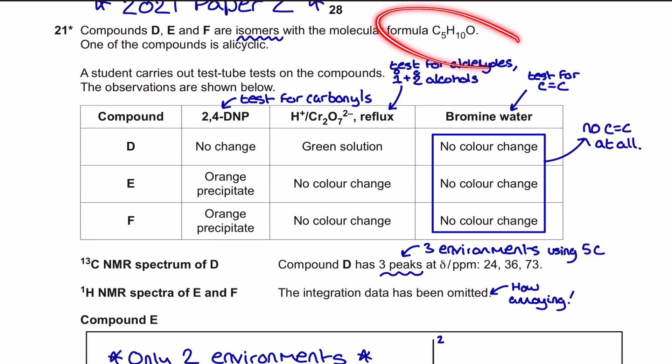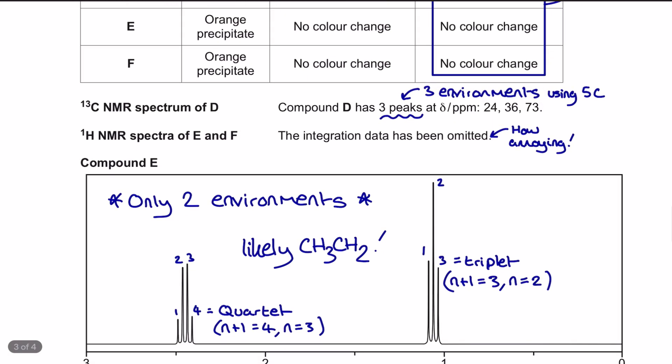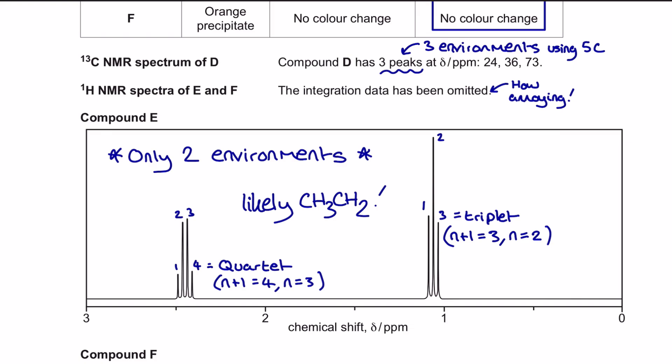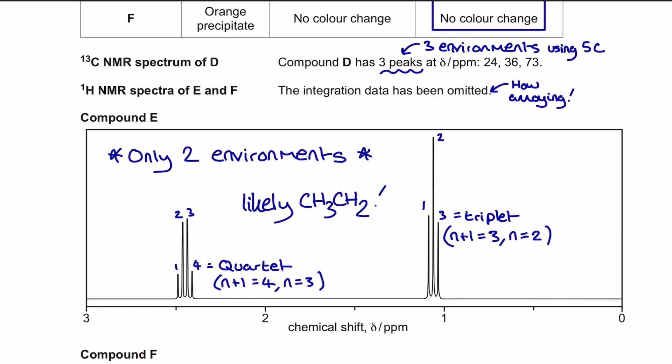They are all isomers of C5H10O and one is alicyclic, which is incredibly likely to be compound D at this stage, since the other two are both ketones and will have very similar structures. Looking at the carbon-13 NMR spectrum of compound D, we've been given three peaks, meaning three environments, with their chemical shift delta values shown. One peak is off on its own, which is very likely to be the alcohol group carbon, and the other two are in the regular region for C–C bonds. We'll look at that in more detail on the next page.